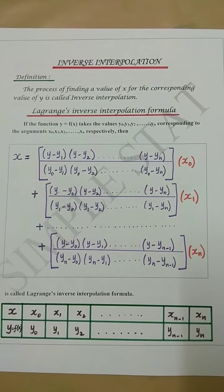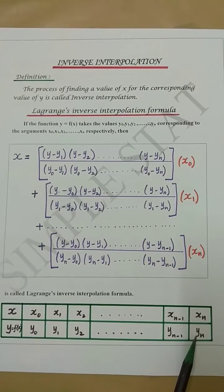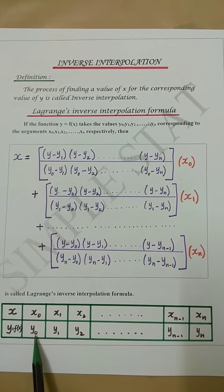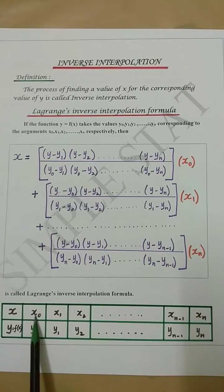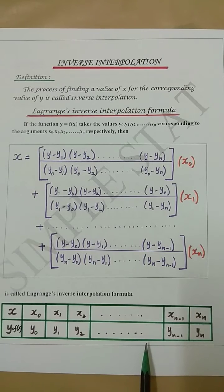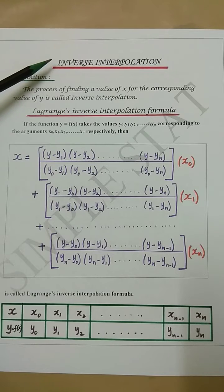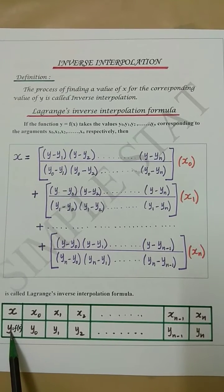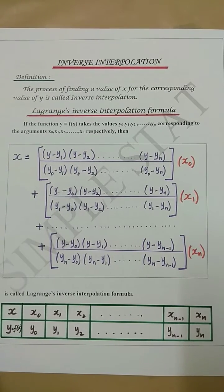Inverse interpolation: suppose that we are given a table of values where the function y = f takes the values y0, y1, y2, ..., yn corresponding to the arguments x0, x1, x2, ..., xn. Inverse interpolation can be defined as the process of finding a value of x for a given value of y.